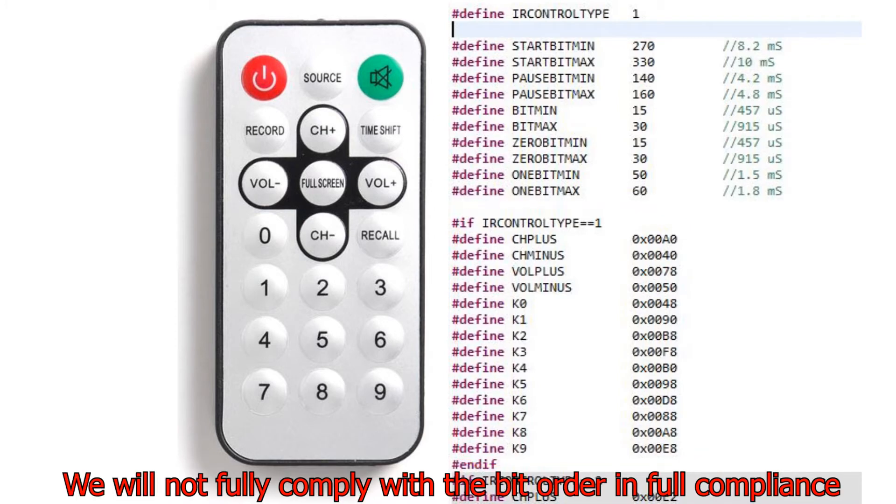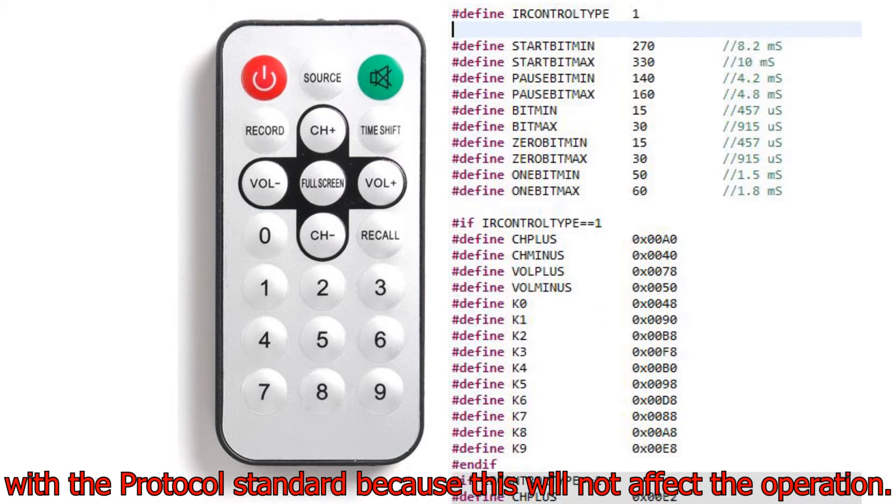The upper part of the code contains the address of the IR receiver and the lower part contains the button code. We will not fully comply with the bit order in full compliance with the protocol standard because this will not affect the operation.